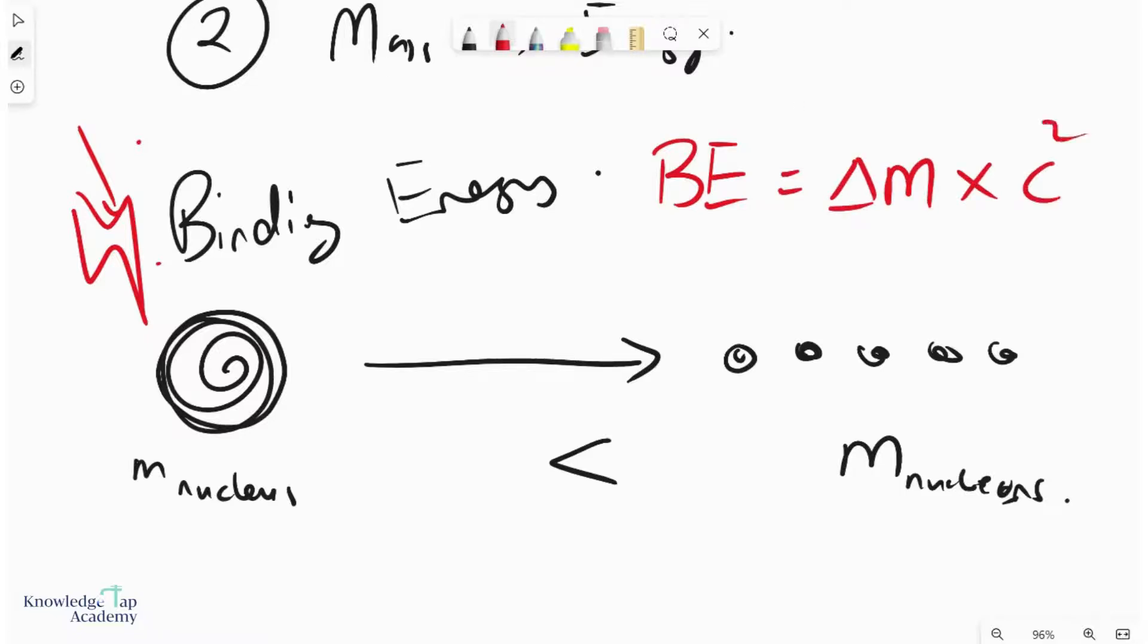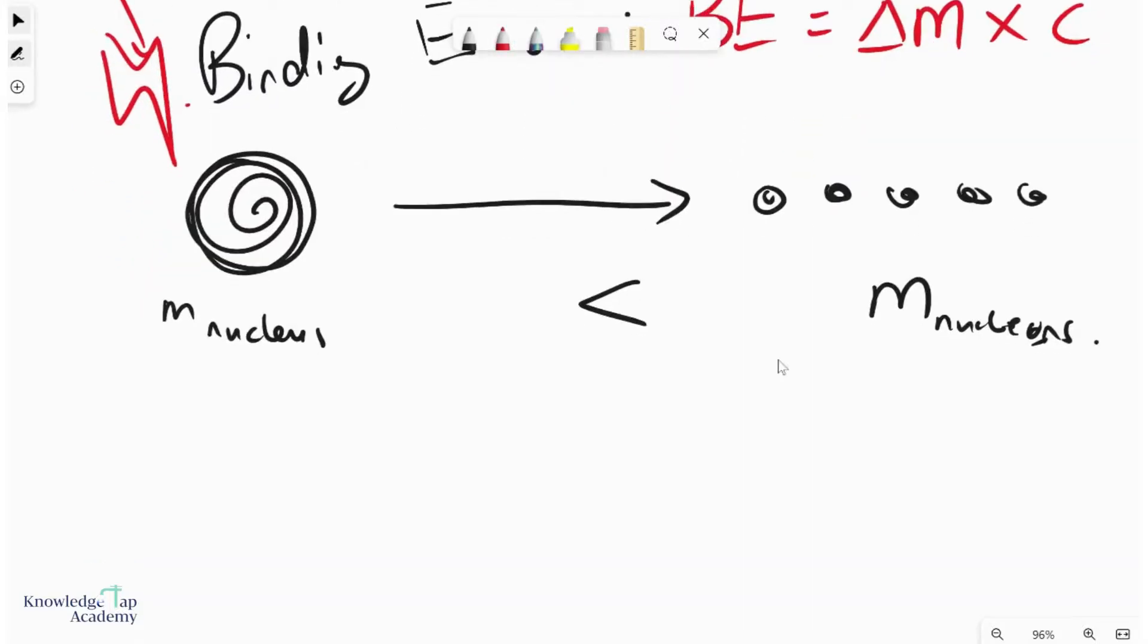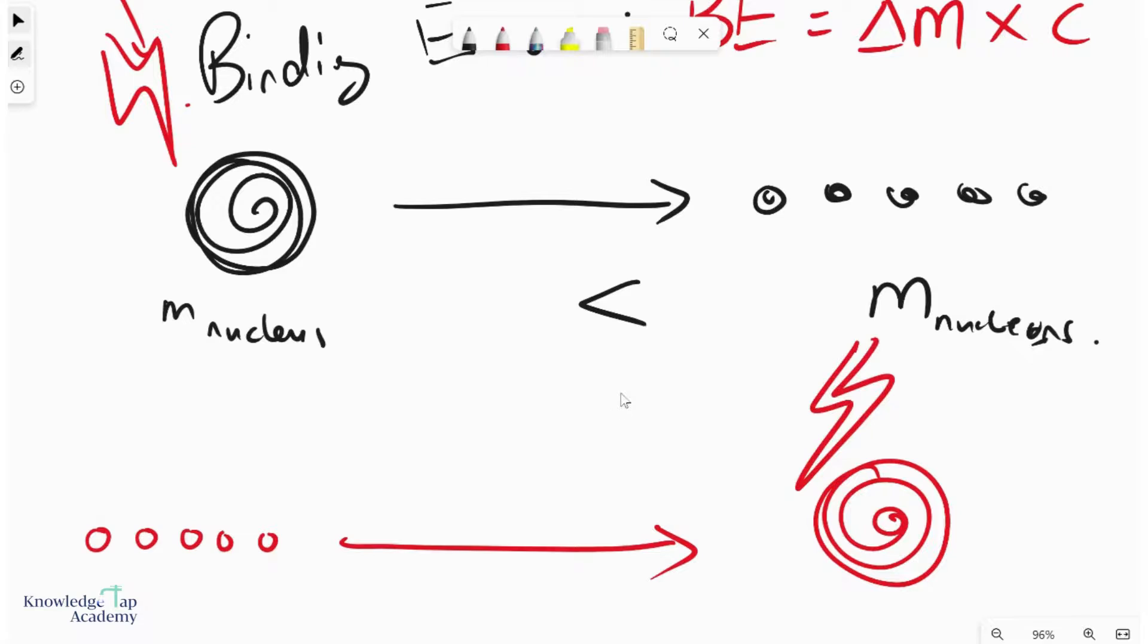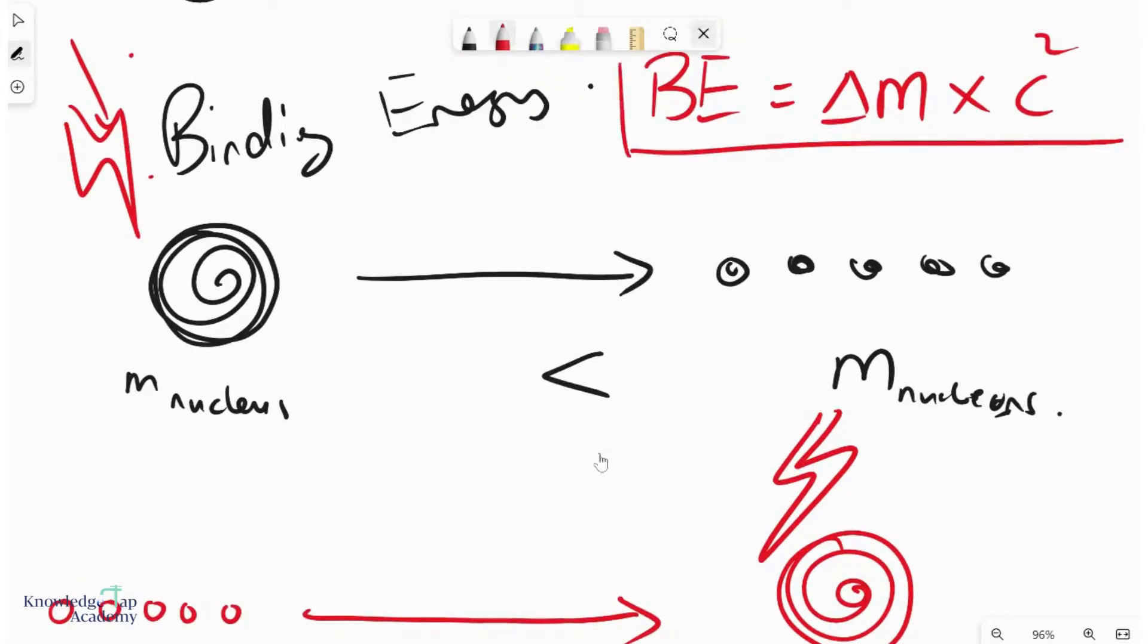Now alternatively, you can also think of it as going the other way. So if you have the nucleons and they recombine to form the nucleus, then in this case you have destroyed mass and so the binding energy has been released in this case. But still it boils down to the fact that the binding energy is simply the mass defect times c squared.